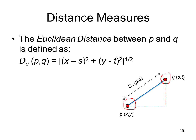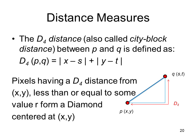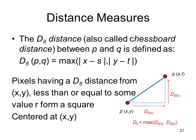The d₄ distance between p and q is |x-s| + |y-t|. The d₈ distance, which is also called chessboard distance, is the maximum value of |x-s| and |y-t|.